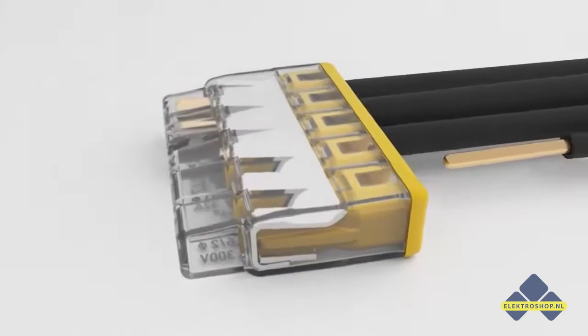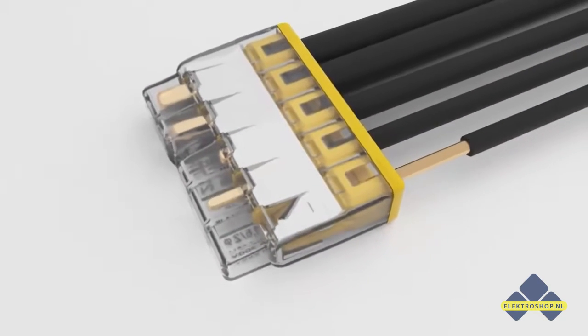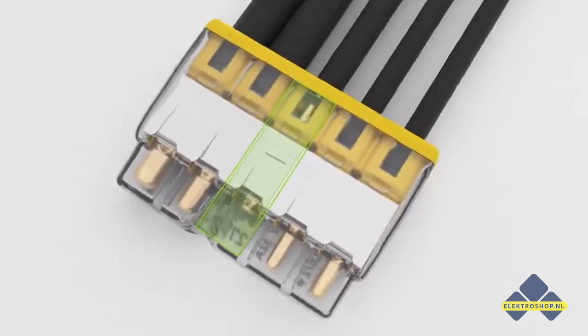The transparent housing permits visual inspection of the conductor position. If conductors are not inserted far enough, they are easily identified.